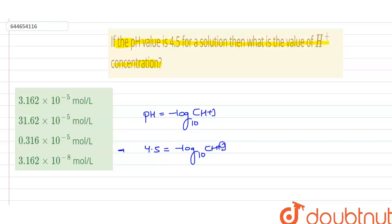of H+ ion concentration. So from here we can easily find the H+ ion concentration as 10 to the power minus 4.5. On solving it, the H+ ion concentration will be equal to